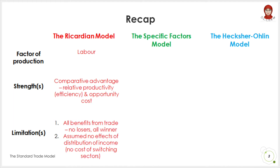In the Ricardian model, production possibilities are determined by the allocation of a single resource — that is, labor — which can move between sectors. This model conveys the essential idea of comparative advantage and opportunity costs. However, this model also assumes that all benefit from trade and assumes no effects on the distribution of income.